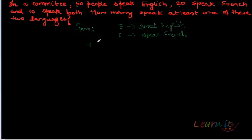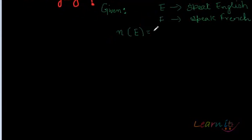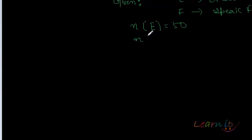So what is given to us? We are given that number of people who speak English is 50, number of people who speak French is 20 and number of people who can speak both, that is the intersection is 10.